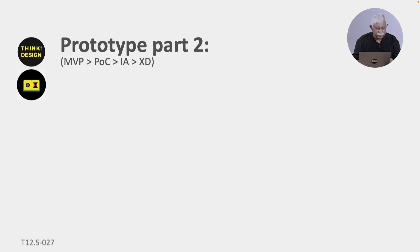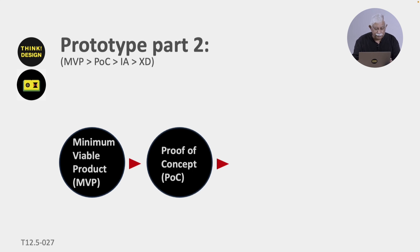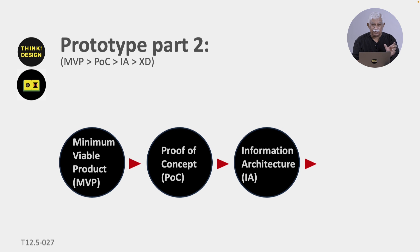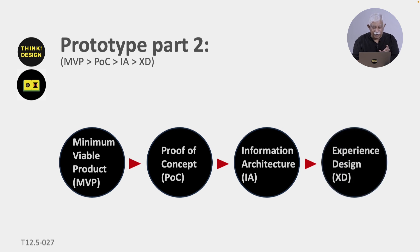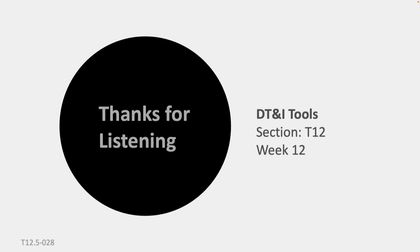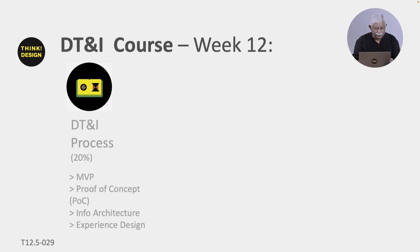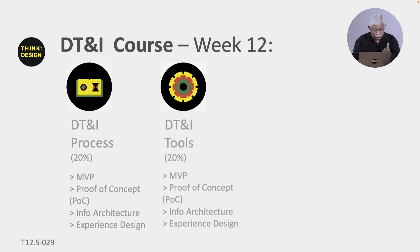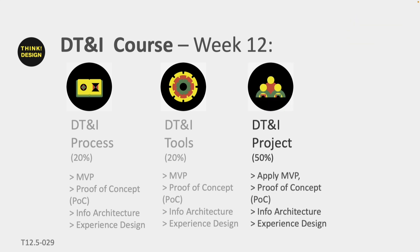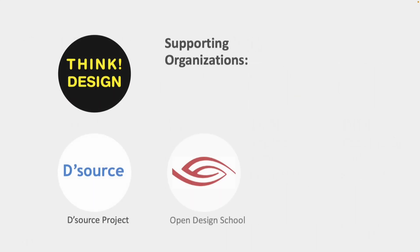So these are the prototype tools — part 2. We saw minimum viable product, proof of concept POC, information architecture IA, and finally experience design. Thank you so much for listening — this was T12, week 12. As a summary: we did the process and we have now done the tools with respect to MVP, proof of concept, information architecture, and experience design. We will now apply it in the project and then have a look at the case study — Application 4. Thank you.